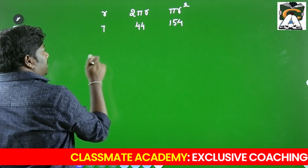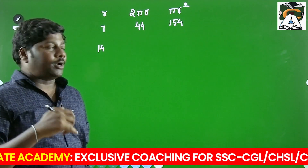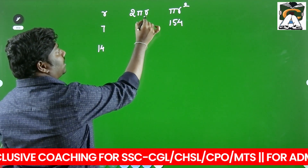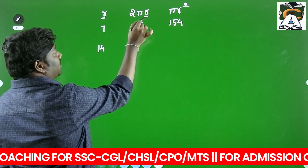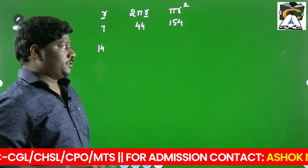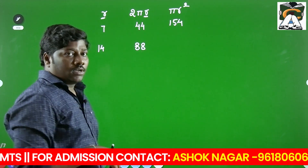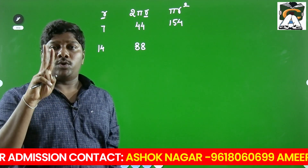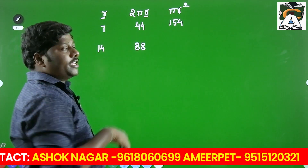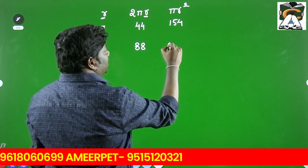You double the radius. If the radius is 14, what happens to 2πr? Since it is only one dimension, if the radius doubles, the circumference also doubles. So circumference becomes 88. When it comes to area, you are using r twice (r × r), so if radius doubles, area becomes 4 times. So 4 × 154 = 616.